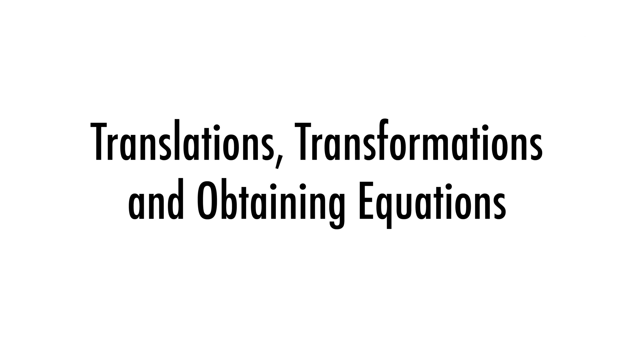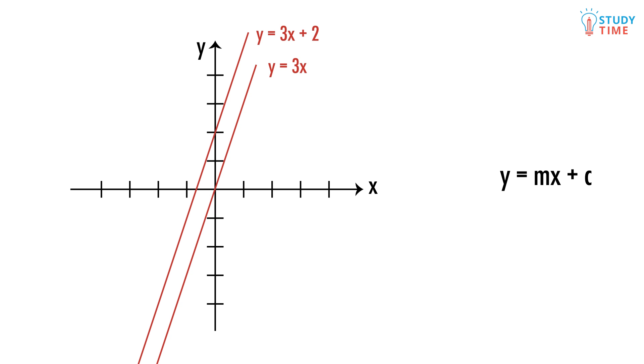Earlier we talked about translations on a linear graph. Remember the equation y equals mx plus c, where m is the slope or gradient of our line and can be positive or negative. We can also change our y-intercept using the term c. If we wanted to move the graph up so that it crossed the y-axis at plus two, we would make c equal to two.